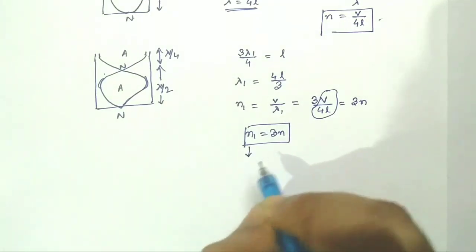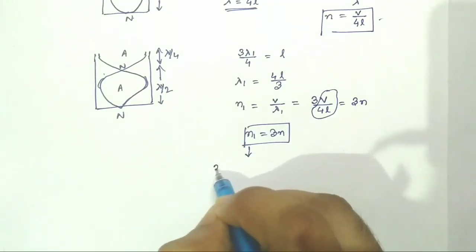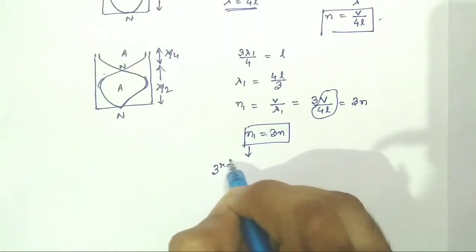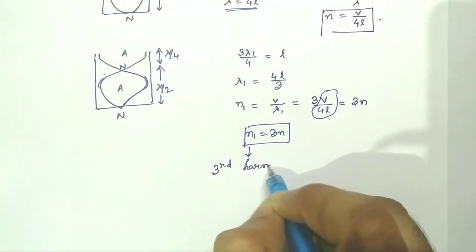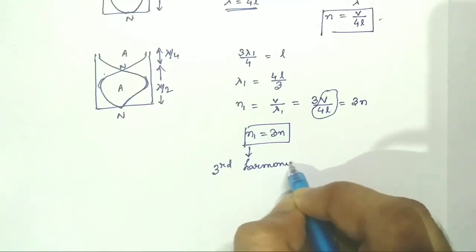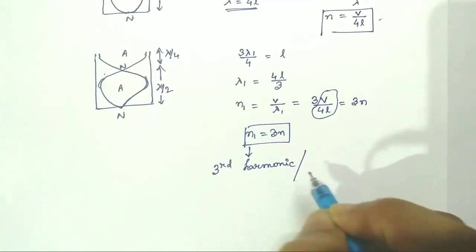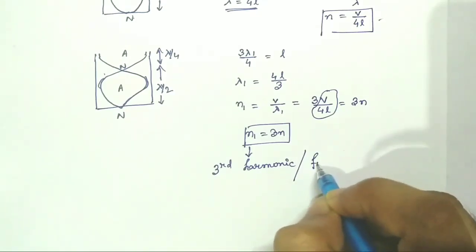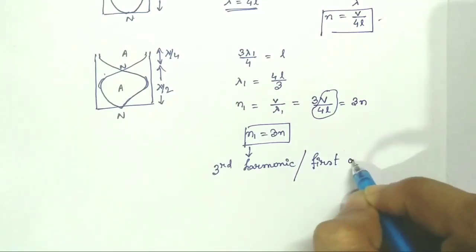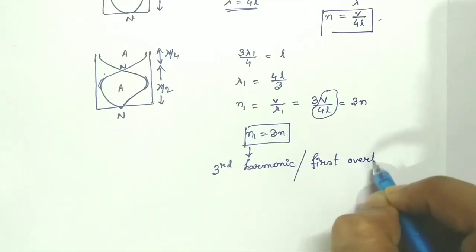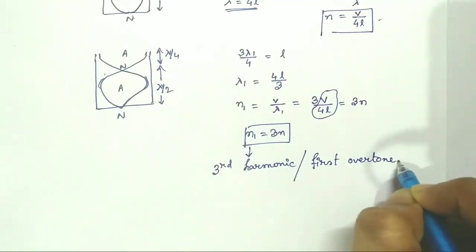This frequency N1 is called the third harmonic or first overtone.